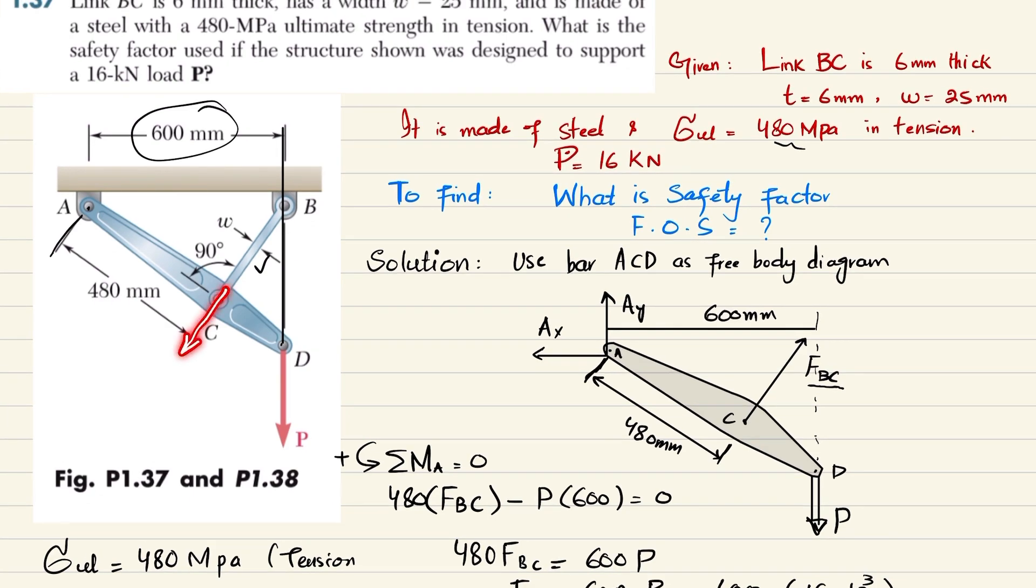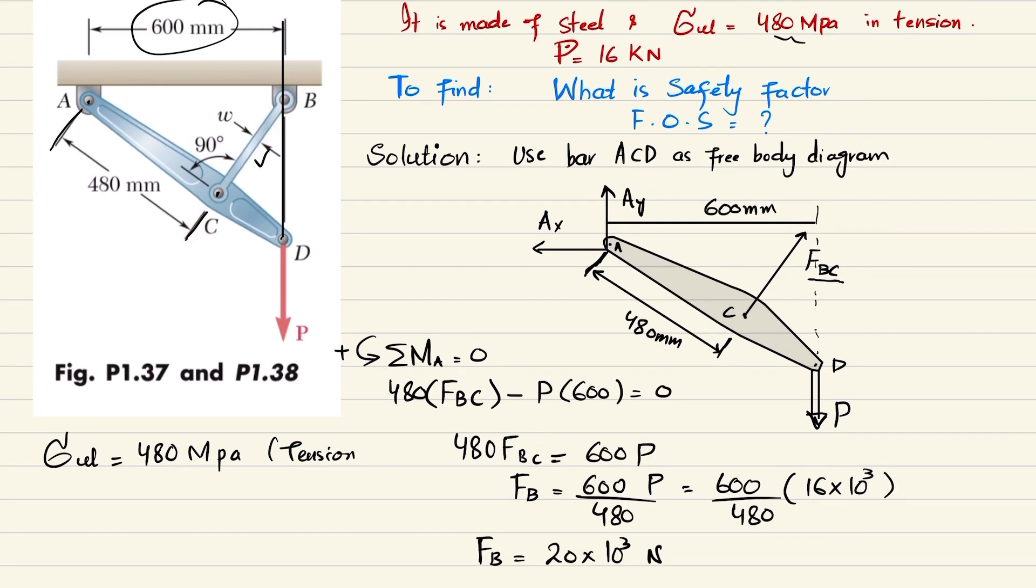This is the load of member BC. We have been given ultimate strength is 480 megapascal. We know that ultimate stress equals ultimate force divided by the area. From here you get F ultimate equals sigma ultimate times area.